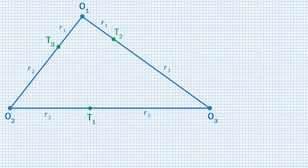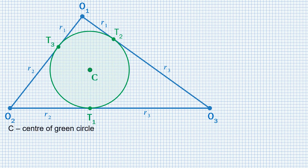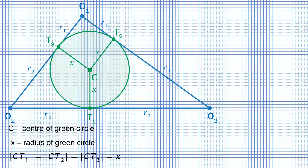Our objective is to find the radius of the green circle which passes through points T1, T2 and T3. Let C be the center of the green circle and X the value of its radius. Draw segments CT1, CT2 and CT3. These segments are radii of the green circle, therefore their lengths are equal to X. Consider triangles O1CT2 and O1CT3.